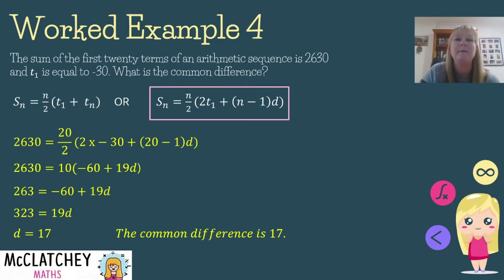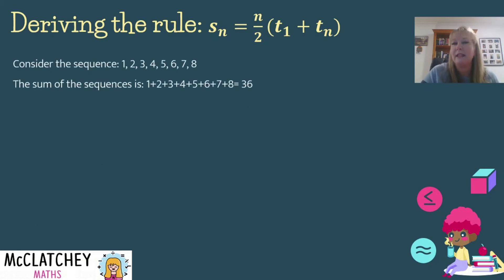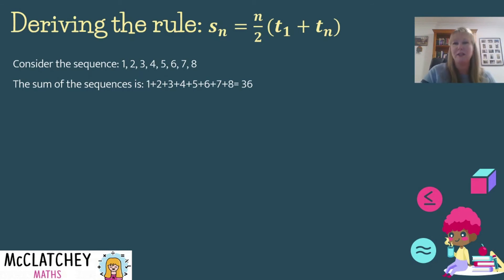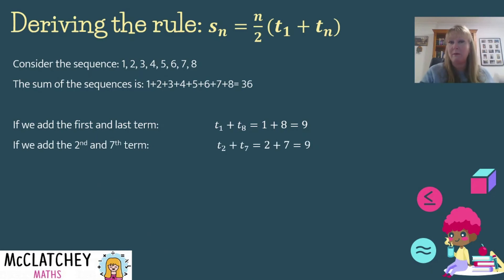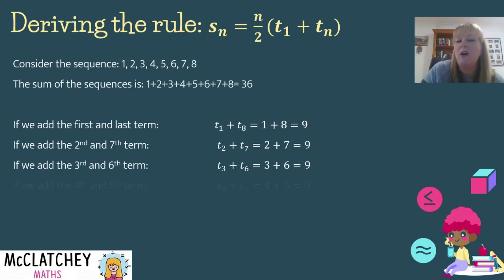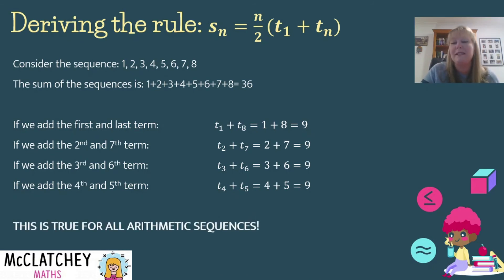Now let's look at where the rule comes from. Consider the sequence 1, 2, 3, 4, 5, 6, 7, 8 — the sum of all eight terms is 36. If we add the first and last terms: 1 + 8 = 9. If we do the same with the second and seventh terms, the sum is also 9, and so is the third and sixth, and the fourth and fifth. This is true of all arithmetic sequences.